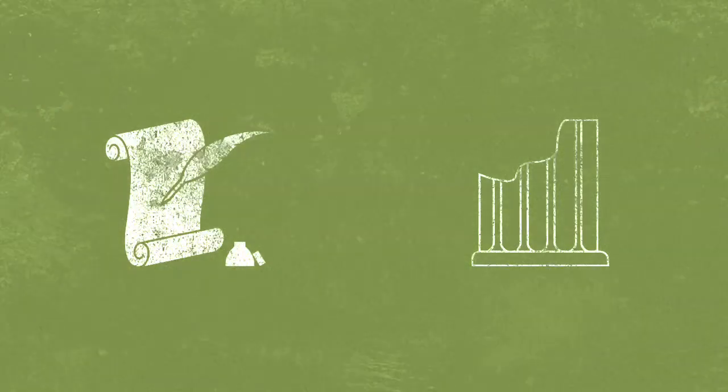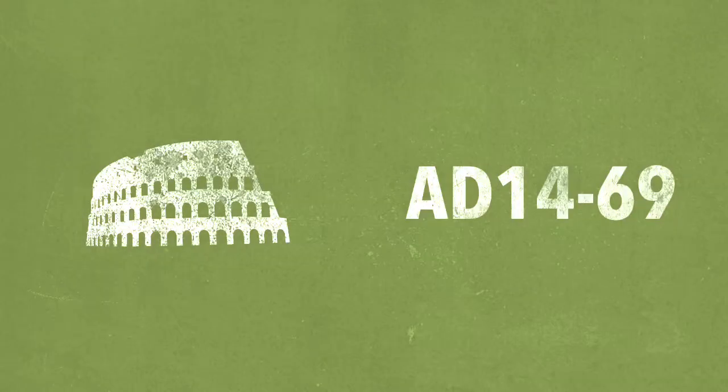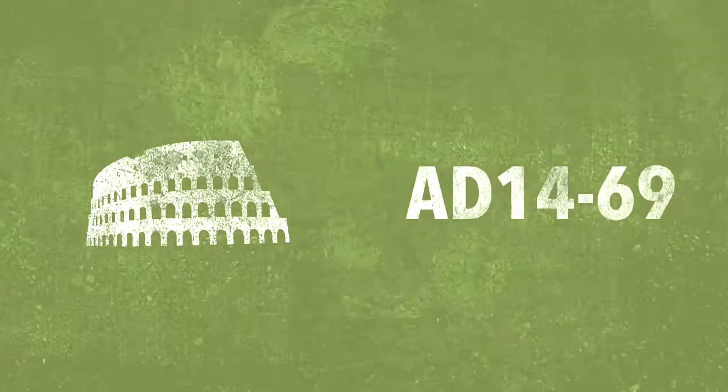In other words we're looking at what was written during and about that time and what was left behind. The where and when is Rome in AD 14 to 69.